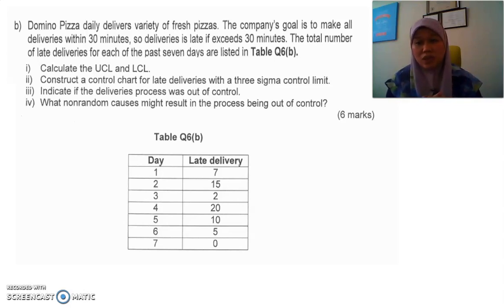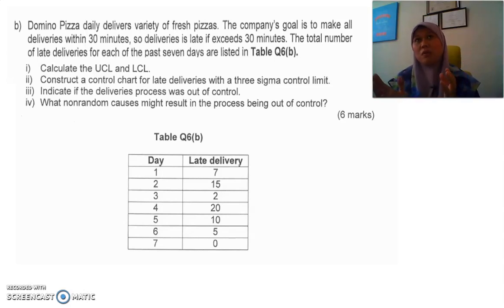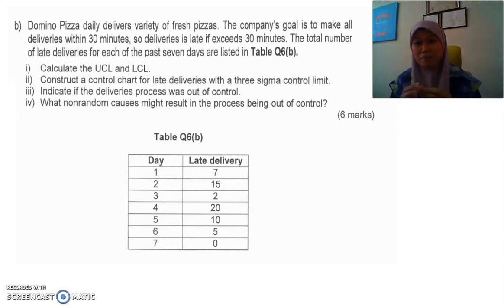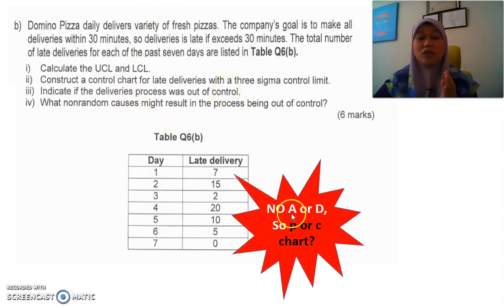Non-random causes, also known as assignable causes, means problems or causes that can be investigated, identified, and solved or rectified. The other type is natural or random causes, which we cannot control — for example, weather affecting delivery. Now, to determine which chart to use: there's no value for A or D, so it's definitely not a variable chart, and there's no measurement in metric units — it's just about late delivery counts.